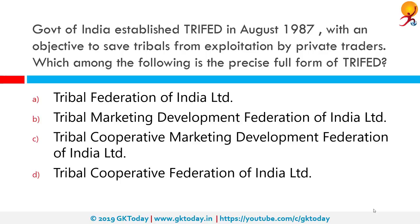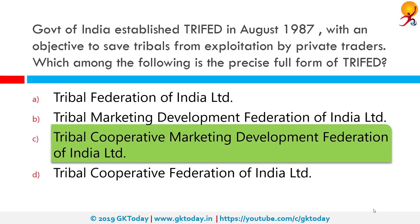The Government of India established TRIFED in August 1987 with an objective to save tribals from exploitation by private traders. Which among the following is the precise full form of TRIFED? The correct answer is Tribal Cooperative Marketing Development Federation of India.